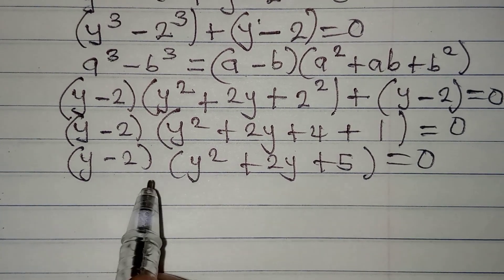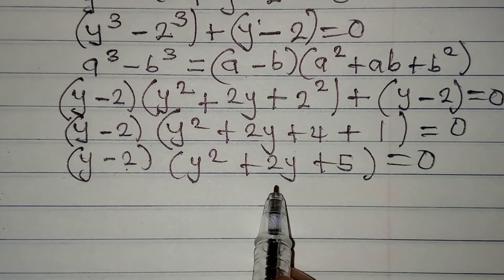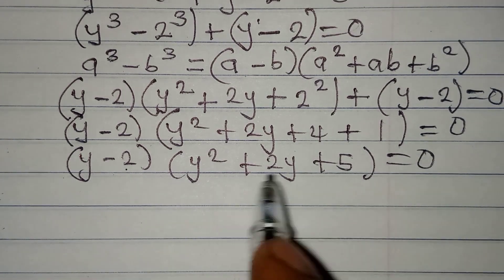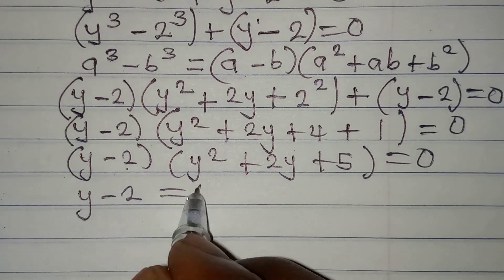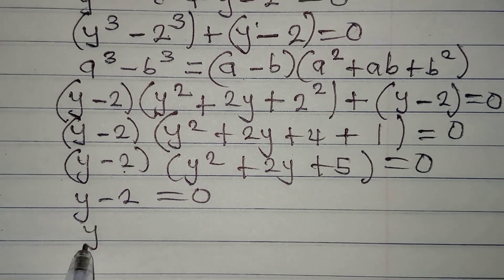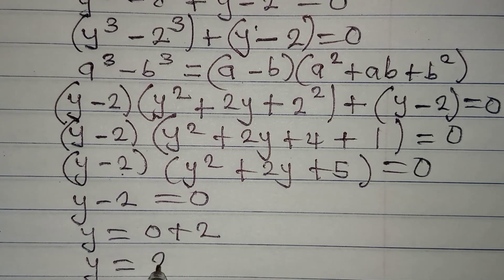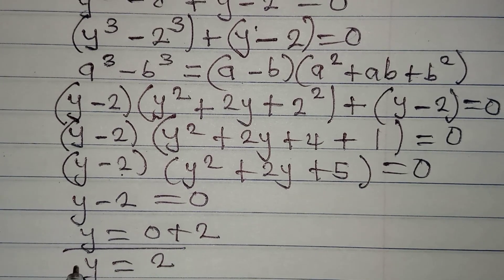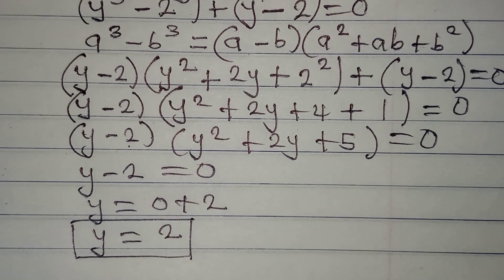Now I will apply the zero product property. We have y minus 2 in one bracket and y squared plus 2y plus 5 in the other. Dealing with the first: y minus 2 equals 0, meaning y equals 2. This is the real solution to this problem.